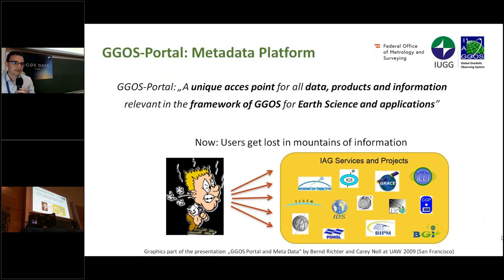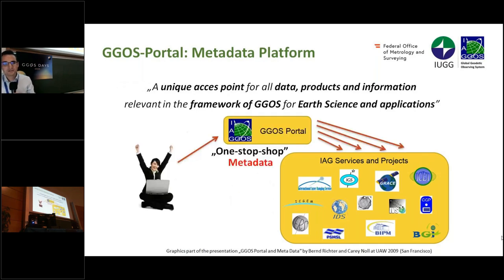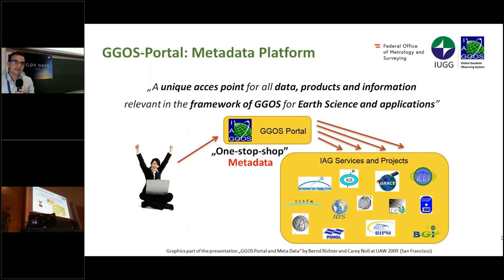For some users, especially those who are not so familiar with geodesy, they have problems finding the data. The JIGOS Portal should serve as a one-stop shop for data and products within the IAG and beyond. It's important to know that the JIGOS Portal does not hold the data itself — it only holds the metadata, which links to the original data. You can search there for data and products of interest and then be directed to the original data center or service websites.